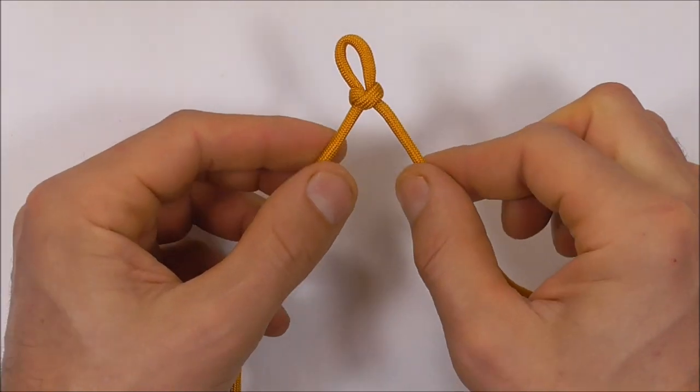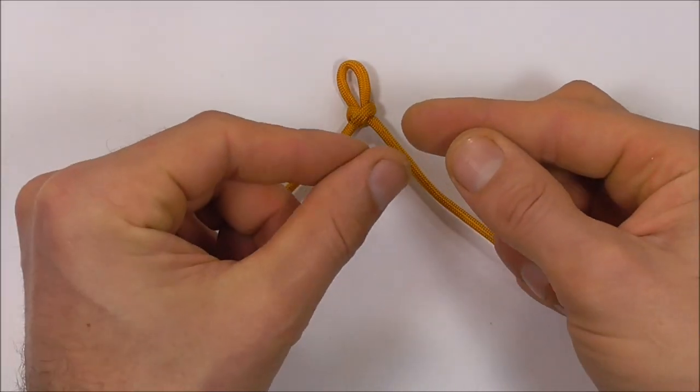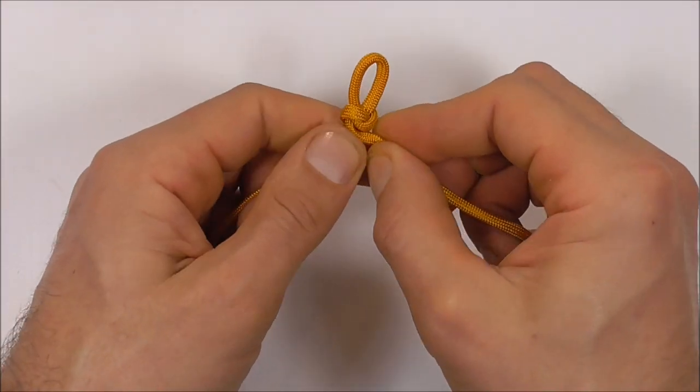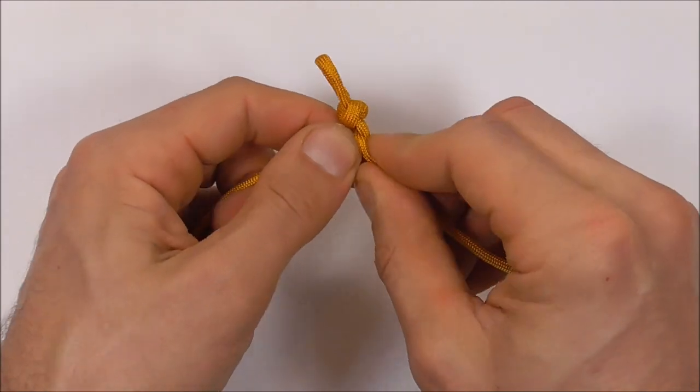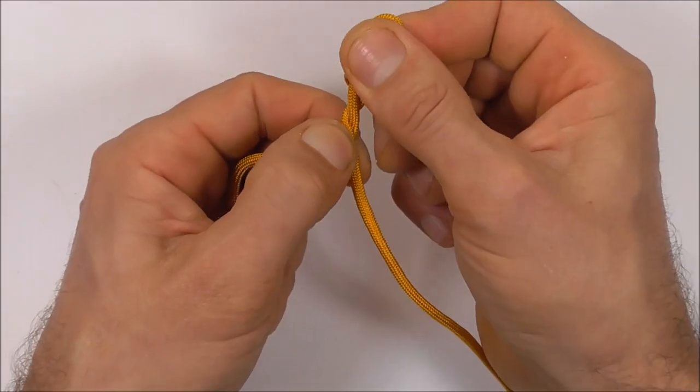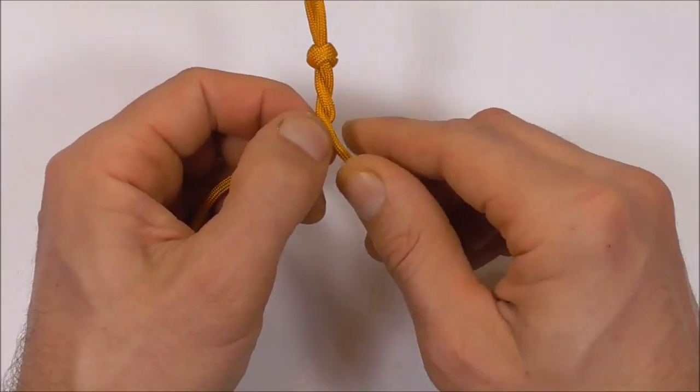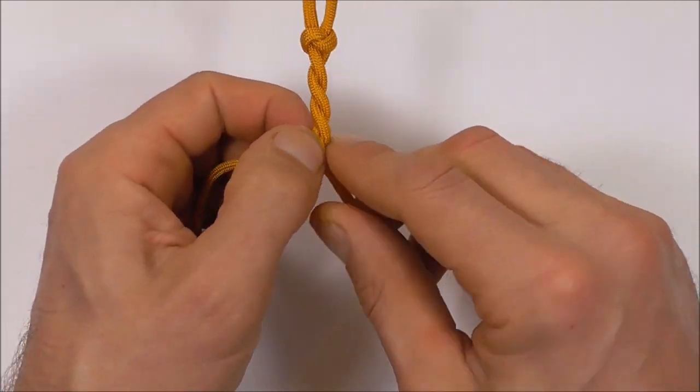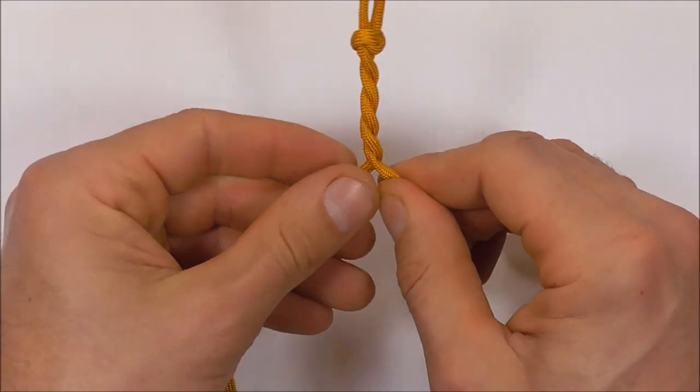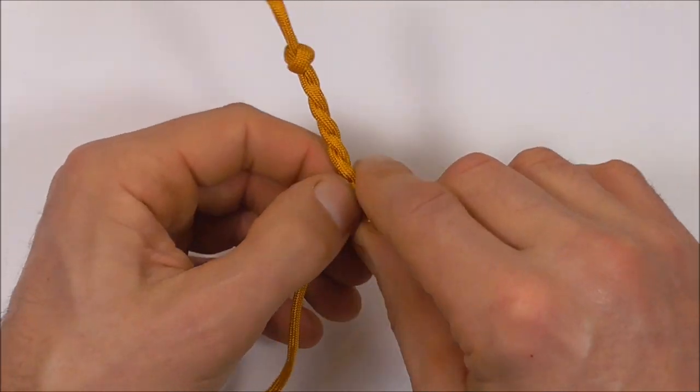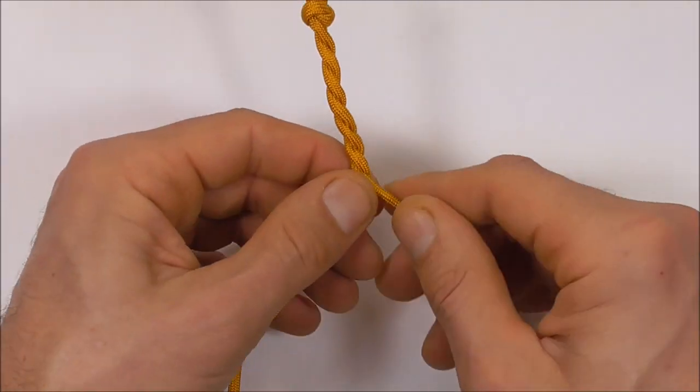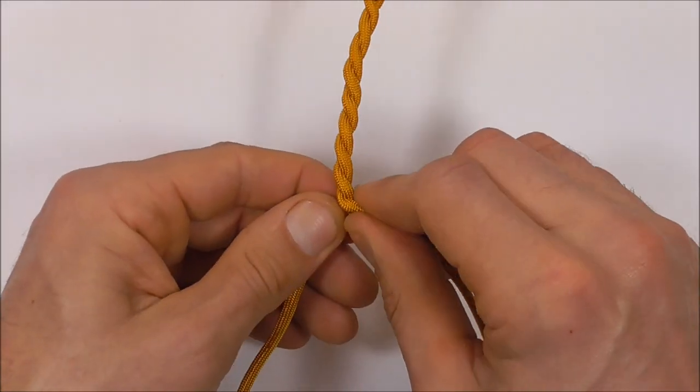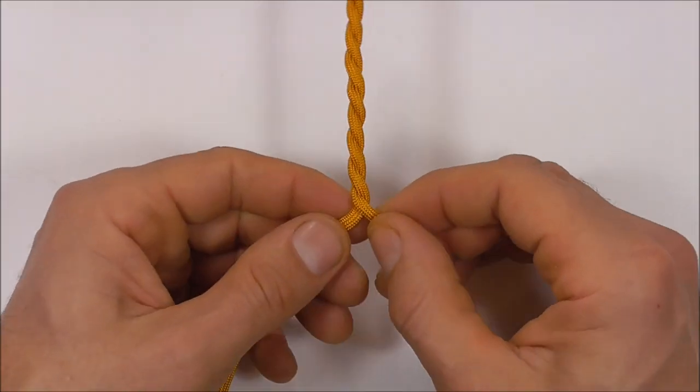Next we just want to introduce a twist into the bracelet and the way we're going to do that is just to roll the paracord between our fingers. Just roll the paracord and twist it up and we want to do this for about 8 centimeters or so, depends on how big your wrist is. I think that's about good for my wrist.